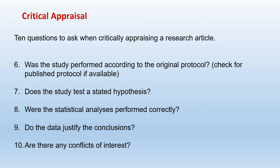Ninth: Do the data justify the conclusions? Sometimes a conclusion may be given which is not justified by the data, so you have to check if the conclusion of the research article is based on the data given in the article itself. Tenth: Are there any conflicts of interest? For example, research may give a clean chit to tobacco smoking or certify that alcohol use is acceptable. In that case, you check — is there any conflict of interest? Are they funded by an alcohol company or a tobacco company? You have to check that the research chosen for the literature review is free from conflicts of interest.